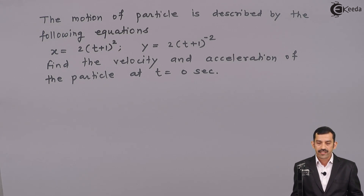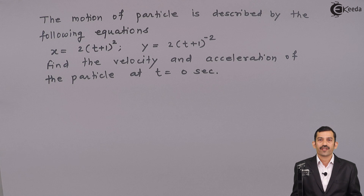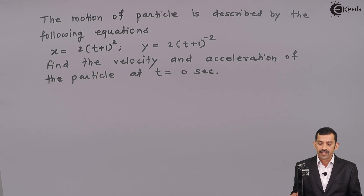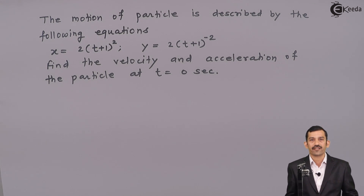As the equations of x and y are known in terms of time t, we have to find out the equations of vx and vy, and the equations of ax and ay, which is possible by differentiating the equations of x and y. Then at t equal to 0 second, we will get the resultant velocity and resultant acceleration.